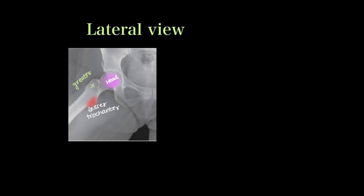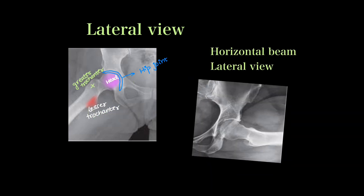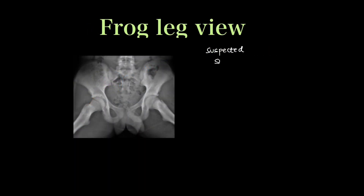The lateral view of hip x-rays is used to see the hip joint very well — we can see the entire head of femur, the lesser trochanter, the greater trochanter, and the entire acetabular fossa. A modification called the horizontal beam lateral view is taken to visualize the neck of the femur when a fracture is suspected, as it is very well seen on this view. The frog leg view is taken in cases of suspected slipped capital femoral epiphysis.